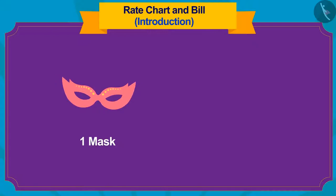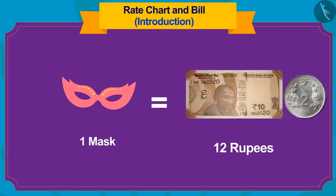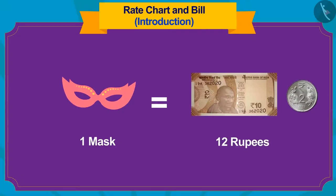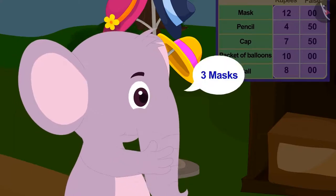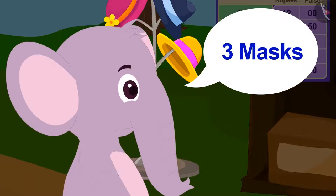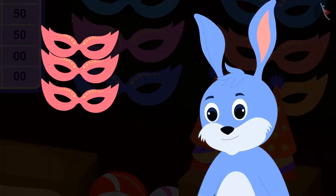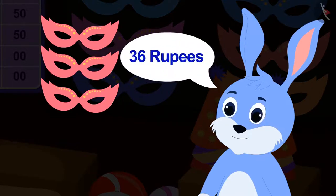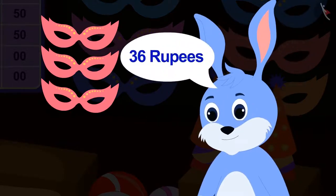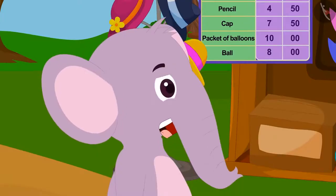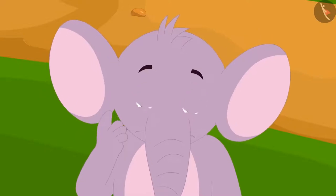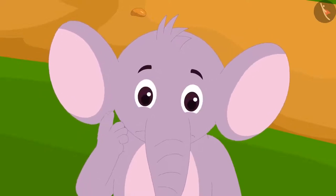Banni told him that one mask is for 12 rupees. Appu asks for three masks from him. Banni told him that three masks would be for 36 rupees. Appu was shocked — he did not understand how Banni found this out.